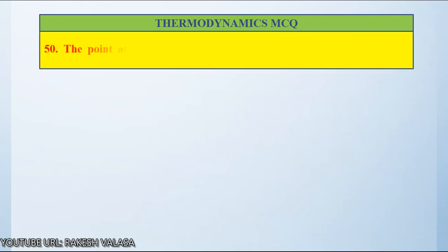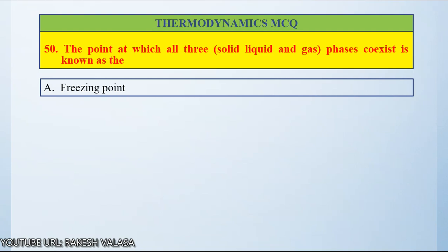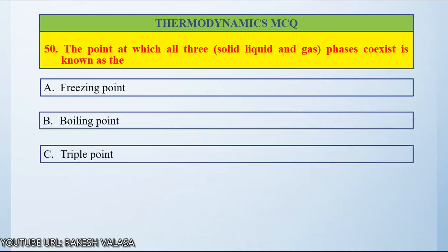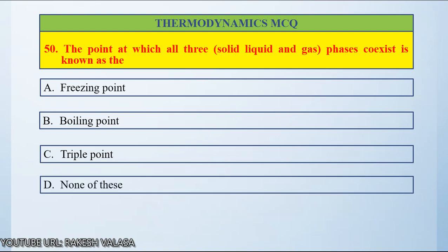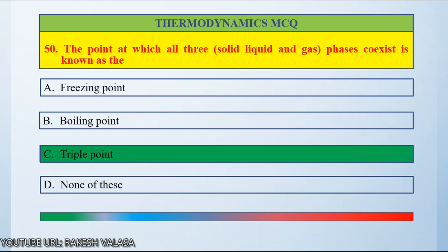Question number 50: The point at which all three phases — that means solid, liquid, and gas phases — co-exist is known as — Option A: freezing point, Option B: boiling point, Option C: triple point, Option D: none of these. The answer is triple point. The point at which all three phases like solid, liquid, and gas co-exist is known as the triple point.